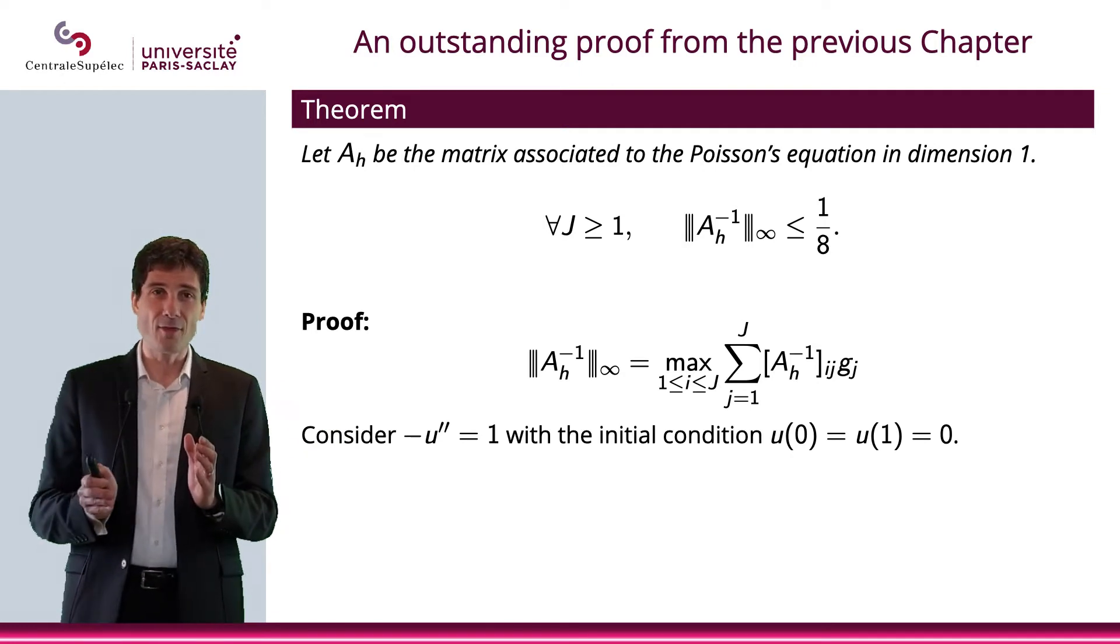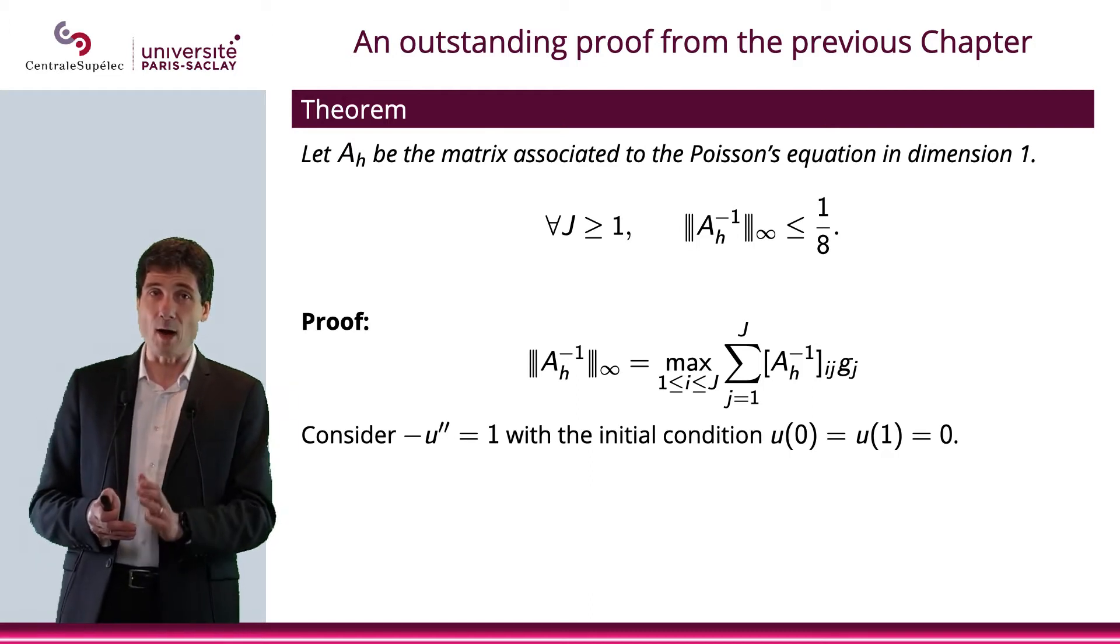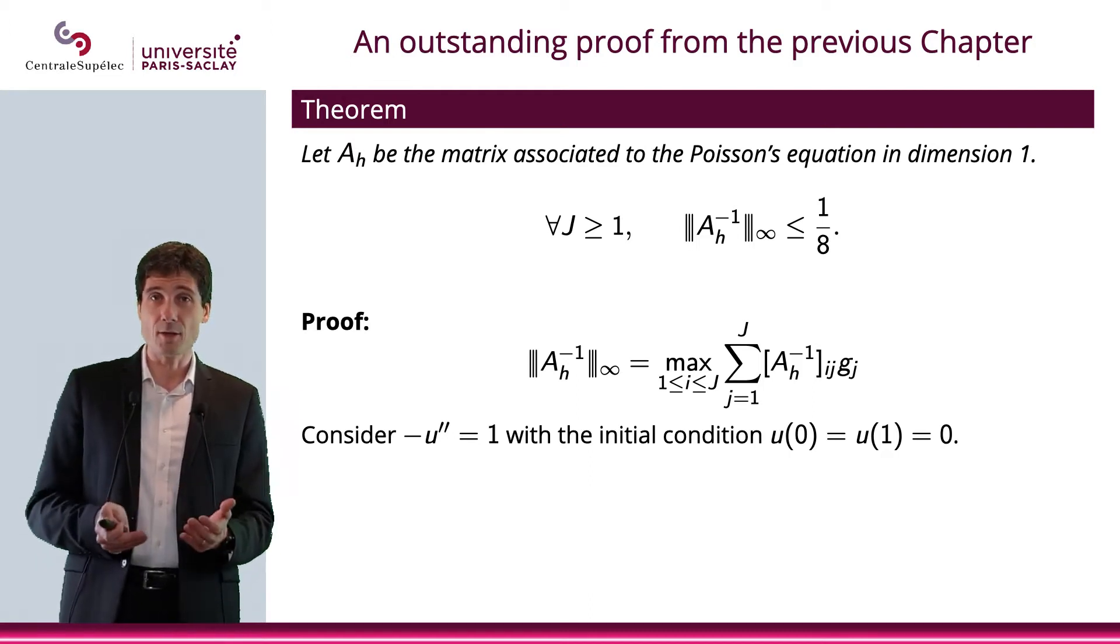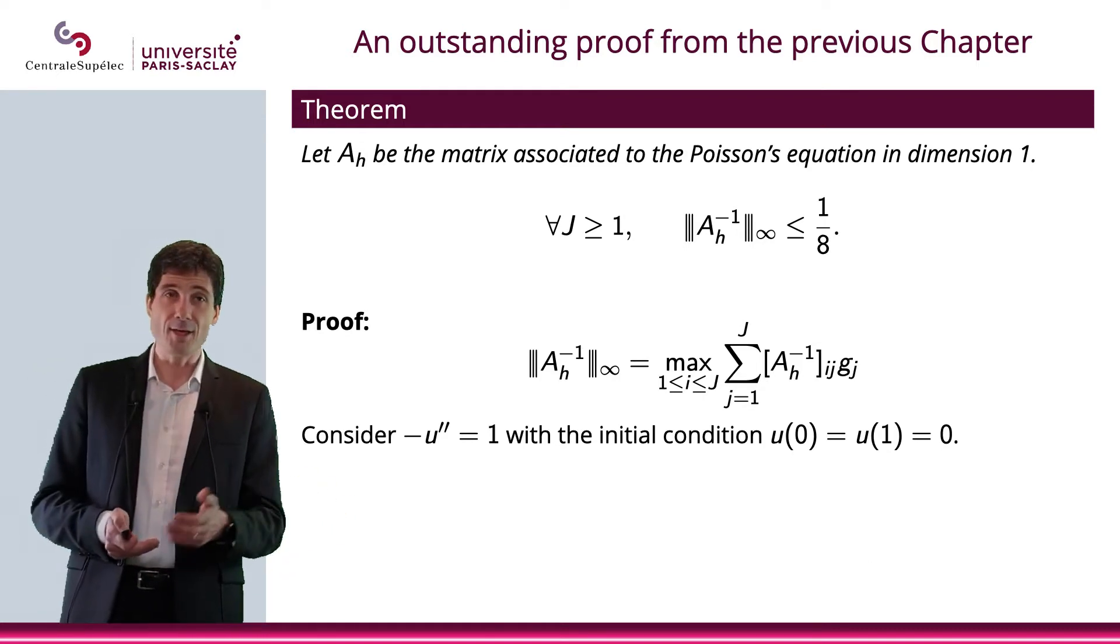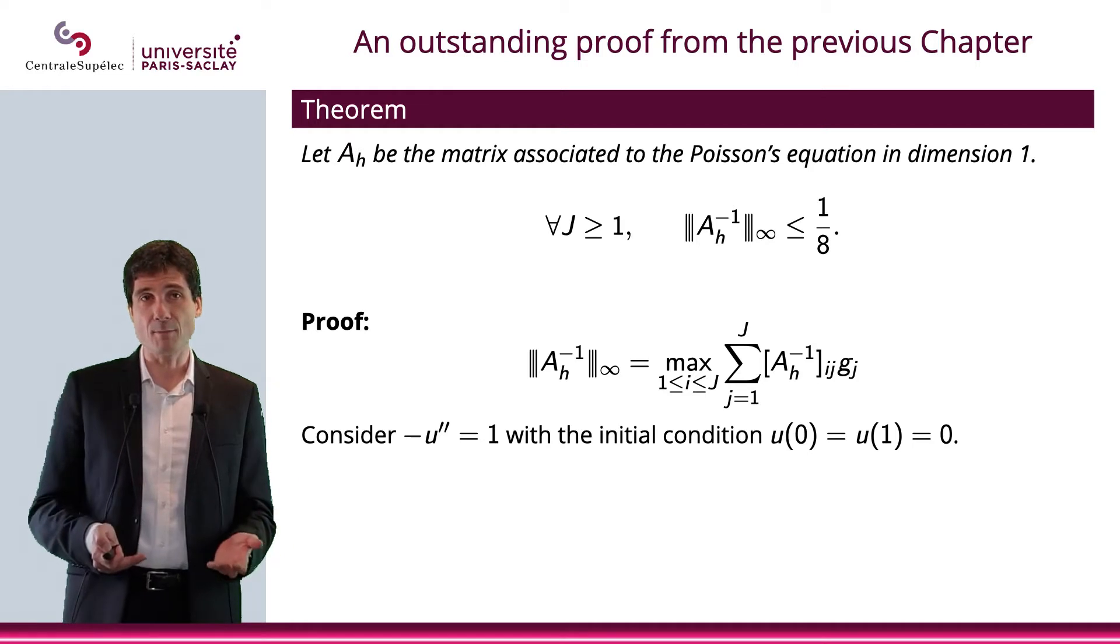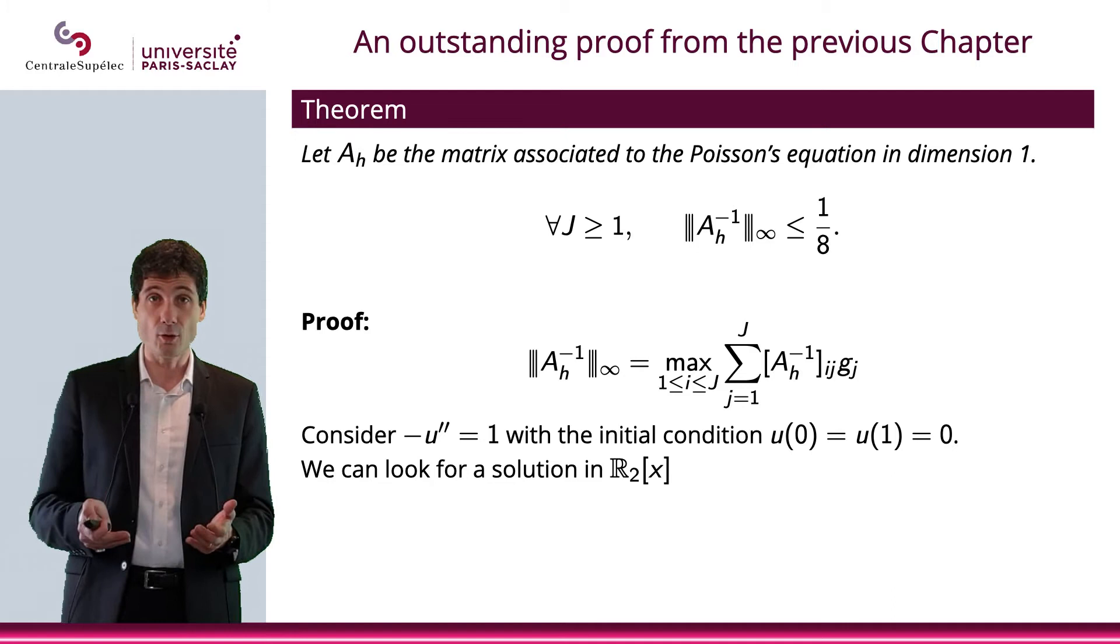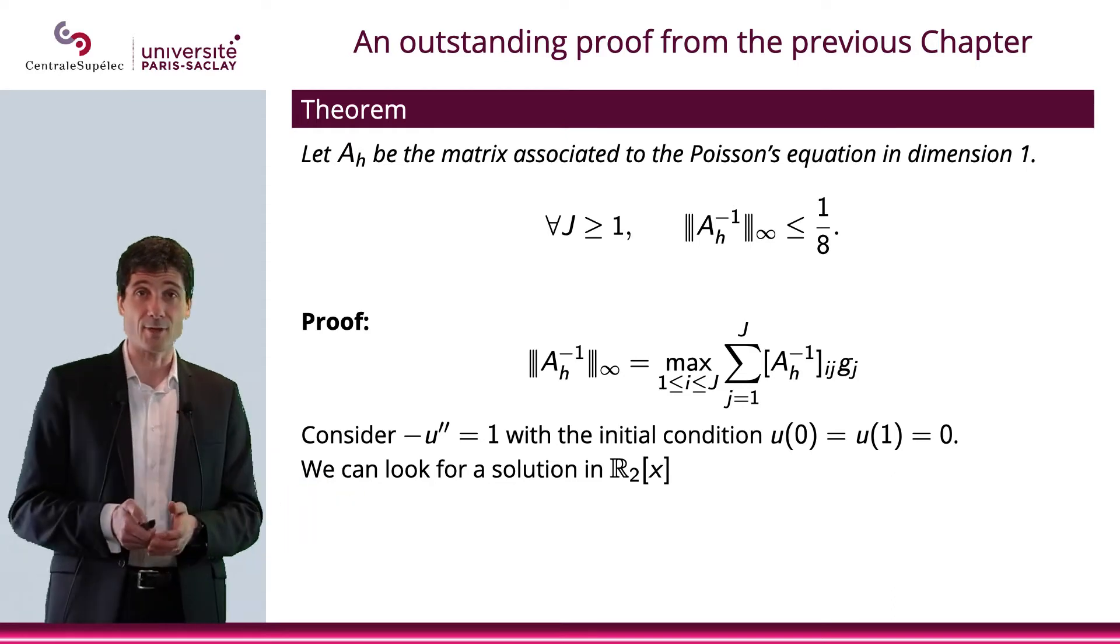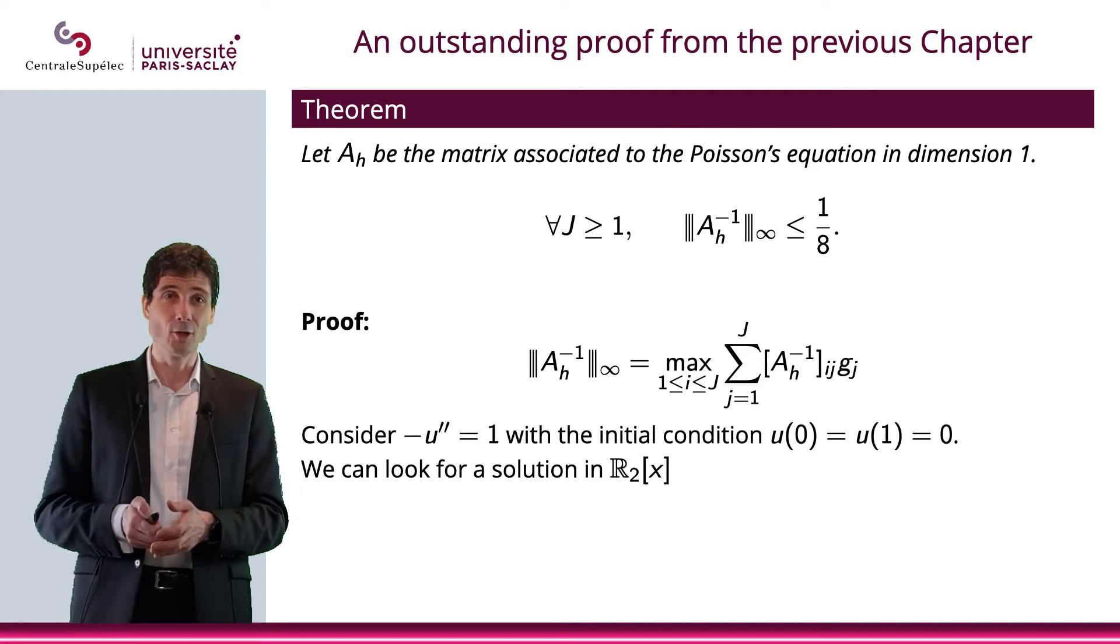Now, consider the equation minus u second equals one with Dirichlet boundary conditions u(0) = u(1) = 0. Well, this differential equation can be really solved easily. We look for solutions as polynomials of degree two. Obviously, when we take the antiderivative of the antiderivative of a constant, this is a good place to look.